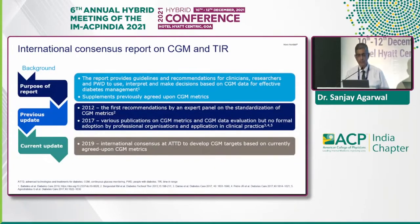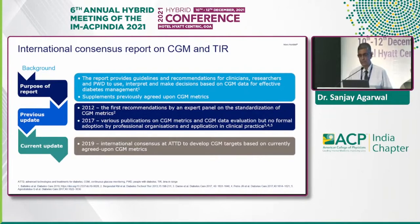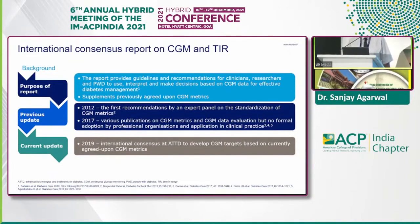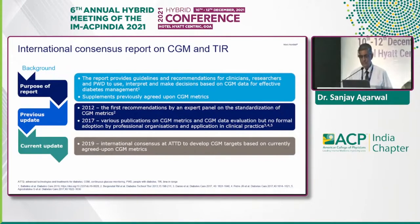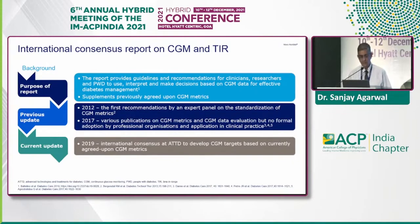Recently, in 2019, the International Consensus Report on continuous glucose monitoring and the concept of Time in Range was published. The purpose was to give unified guidelines and recommendations for clinicians, researchers, and patients with diabetes on the use, interpretation, and decision-making based on CGM data for effective diabetes management. This built on 2012 expert panel recommendations for standardization of CGM metrics and 2017 publications, and finally in 2019 the international consensus agreed to develop CGM targets based on agreed-upon CGM metrics.